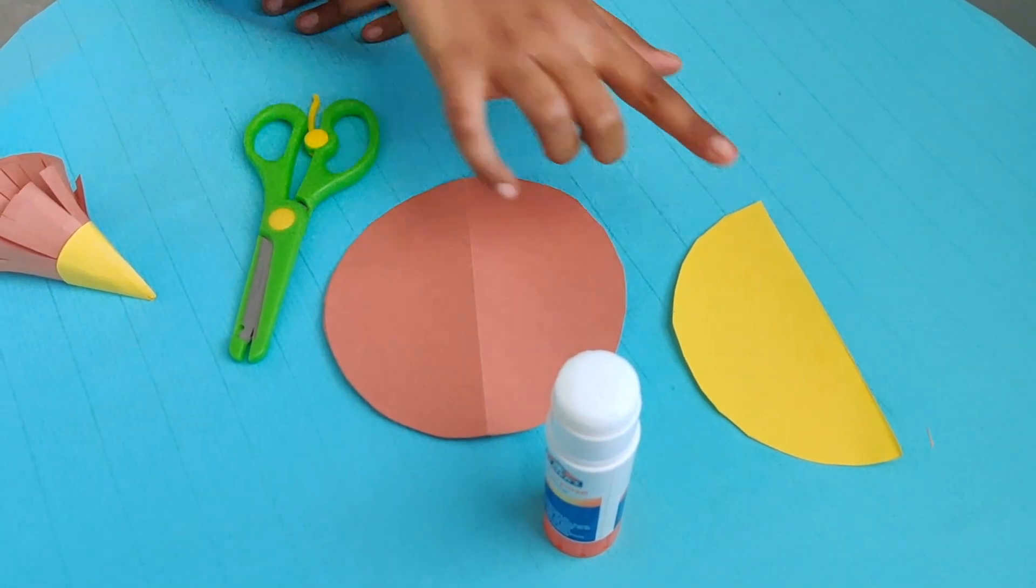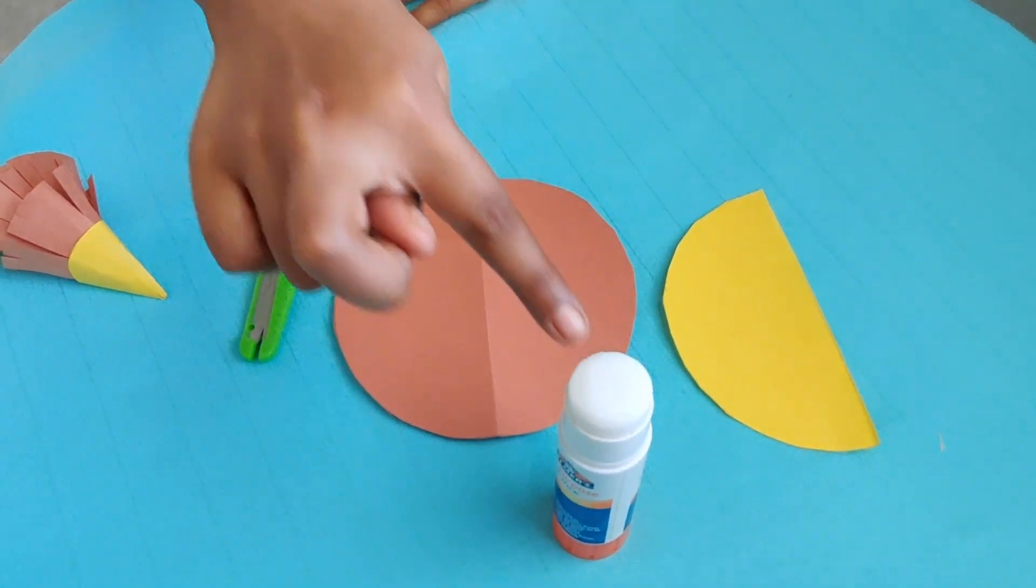To make this easy finger puppet, all you need is brown construction paper, yellow construction paper, some glue and scissors.